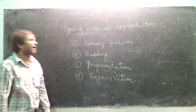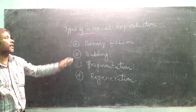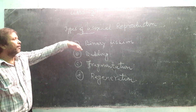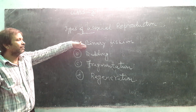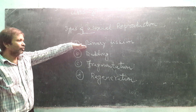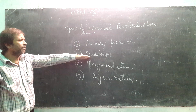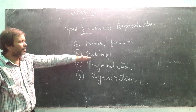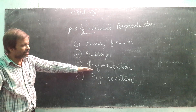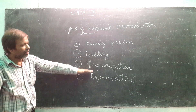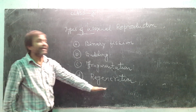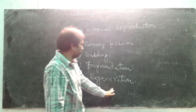Now, types of asexual reproduction: the first one is binary fission, after that is budding, then fragmentation, and finally regeneration.